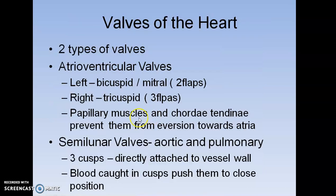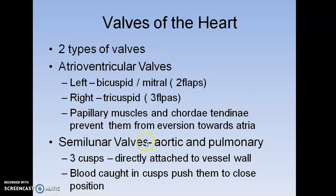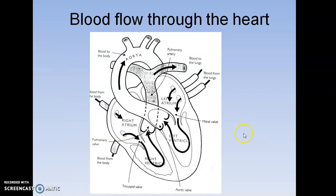There are four types of valves present. The atrioventricular valves are the tricuspid and bicuspid valves. The tricuspid valve is present between the right atrium and right ventricle, and the bicuspid (mitral) valve is present between the left atrium and left ventricle. These valves prevent backflow — the aortic valve prevents backflow from the aorta to the left ventricle, and the pulmonary valve prevents backflow from the pulmonary arteries.